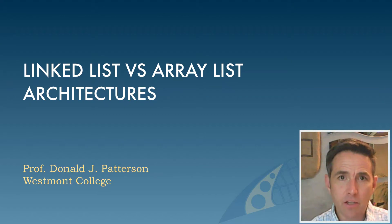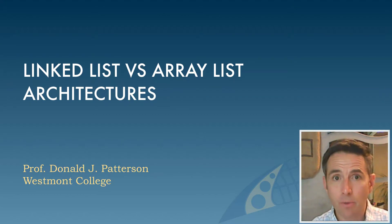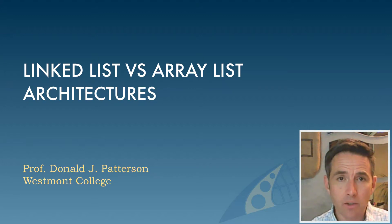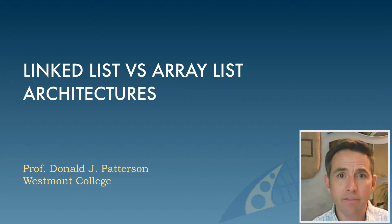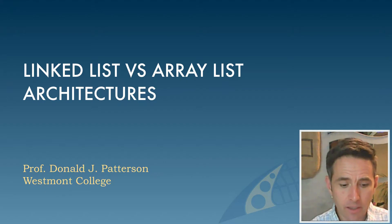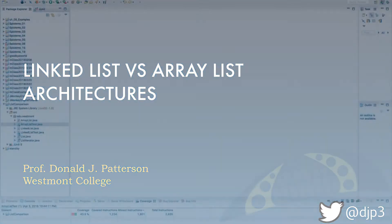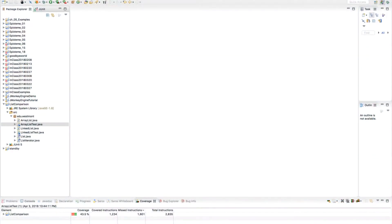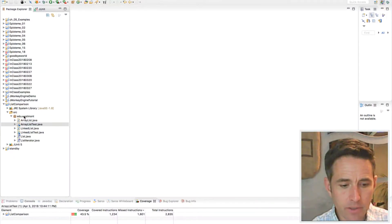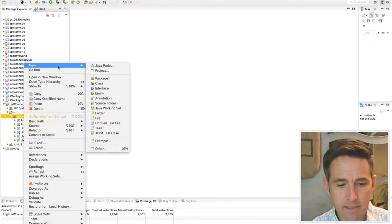We've looked at the implementation of a linked list and an array list, and we've written tests to make sure they behave as they are supposed to. Now what we want to do is look at the performance of these two implementations with different combinations of method calls, to see why you might choose one or the other — or even why different implementations make sense. Let's go to Eclipse and create a new timing test class.